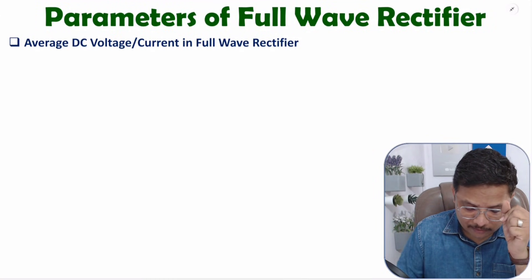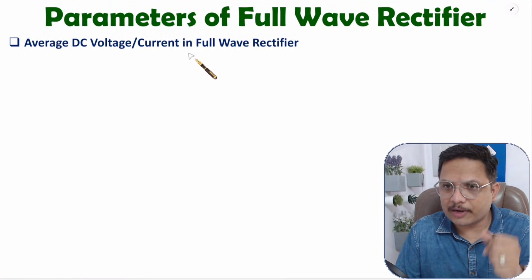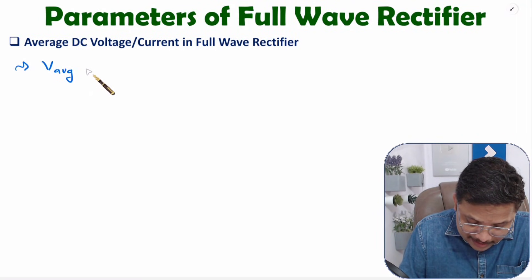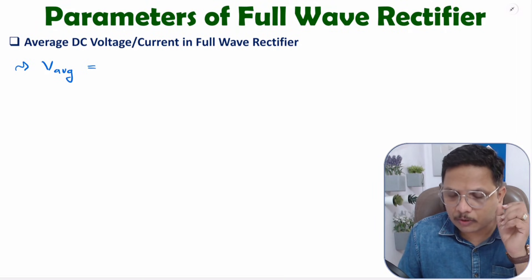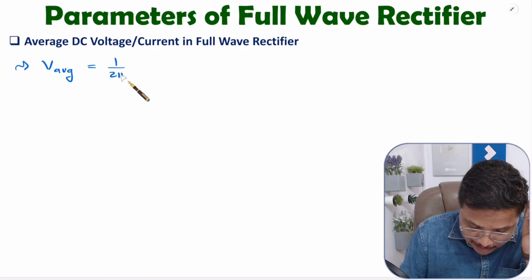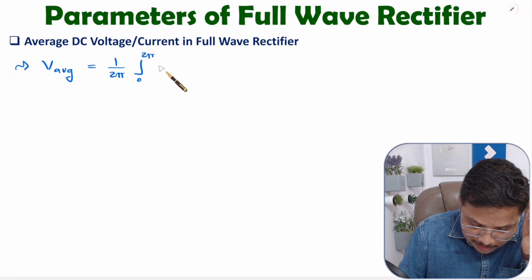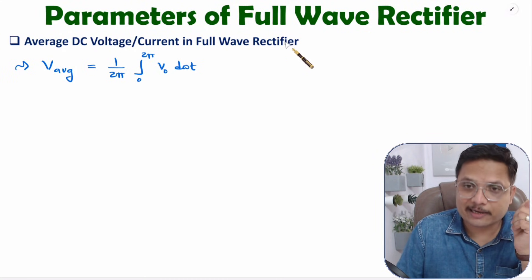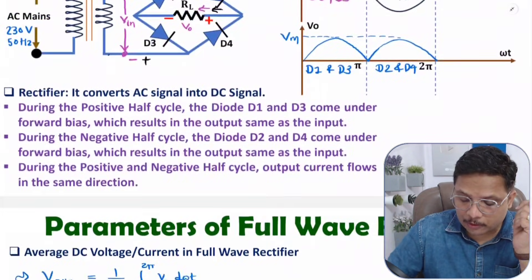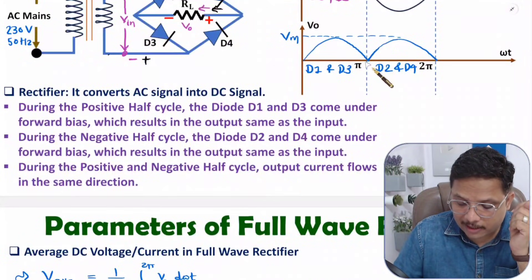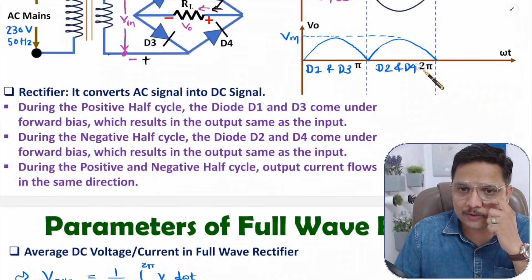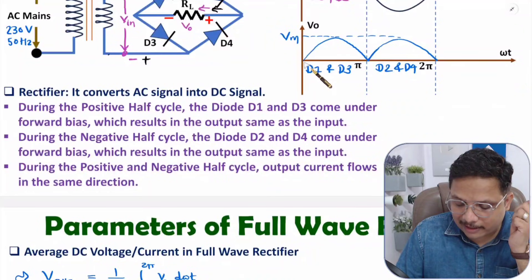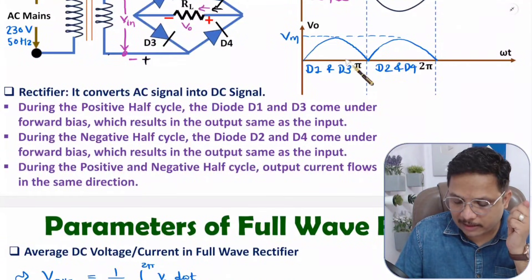Now let us derive the first parameter — average DC voltage and current of full wave rectifier. For average calculation, the basic equation is: one by two pi, integration from zero to two pi of the function d(ωt). Here the function is the output voltage. If you see the output voltage waveform, from zero to pi and pi to two pi it is repeating, so I'll take the zero to pi integration and double it.